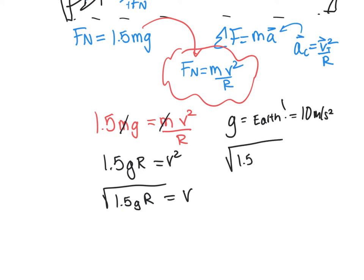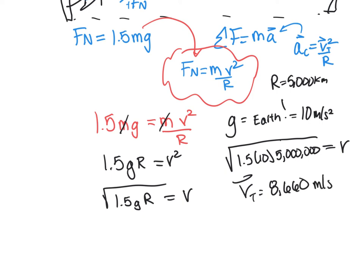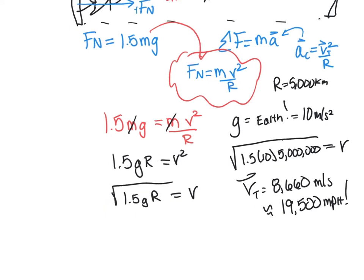That actually gives us a velocity tangential of 8,660 meters per second. That is approximately 19,500 miles per hour. So that is how fast the halo ring is actually spinning to produce 1.5 times Earth's gravity on the people of the halo ring. That's pretty incredible. That's kind of awesome how we can figure that out.